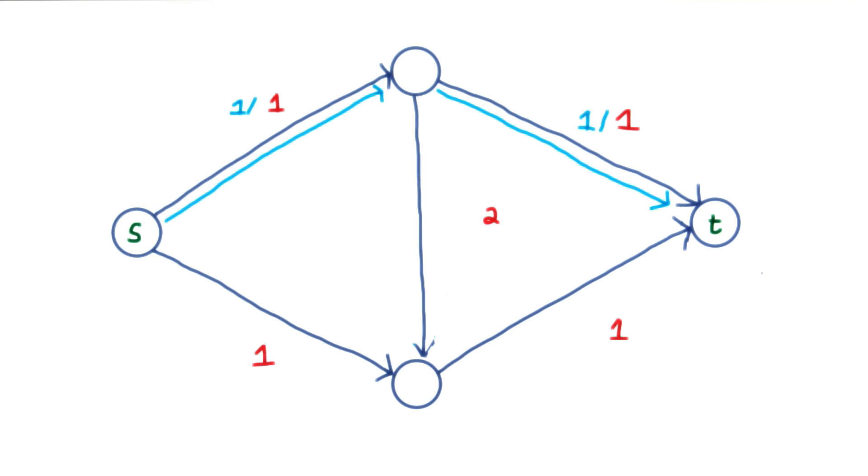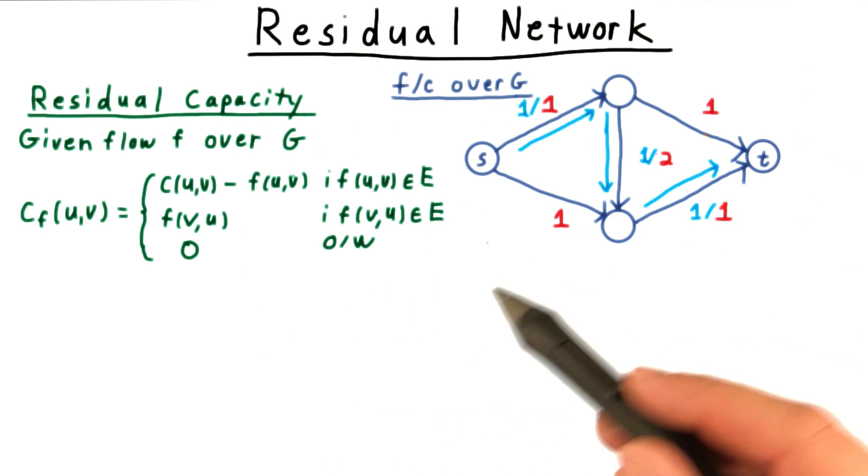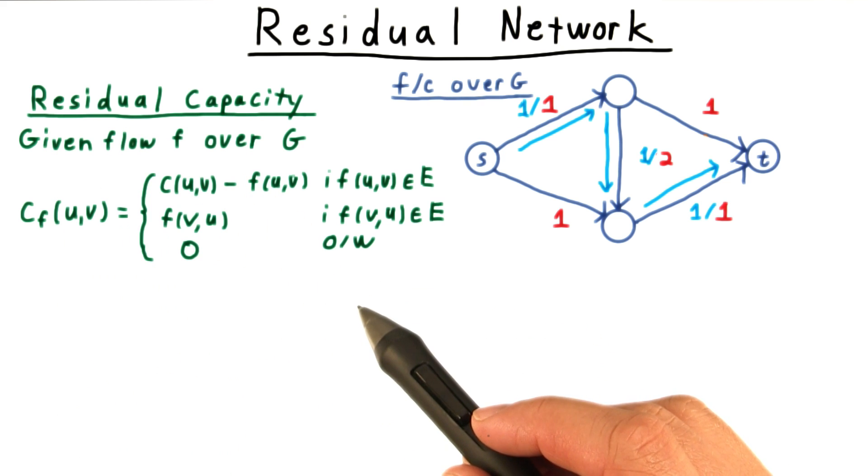Certainly, if we've used up some of the capacity on an edge, we can't use the full capacity in the flow we're going to add. We capture the rules for the flow that we are allowed to add with the notion of a residual flow network. We start by defining the residual capacity for all pairs of vertices.